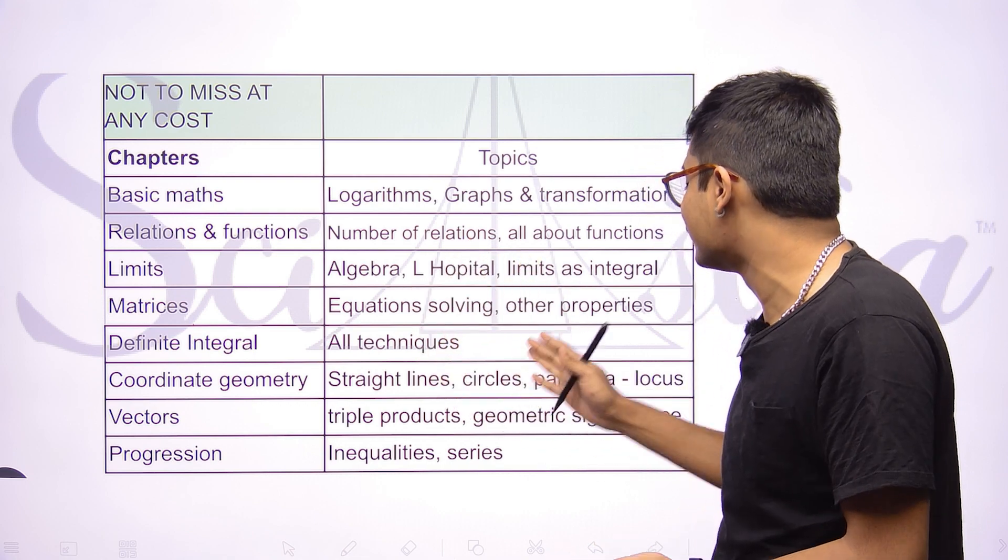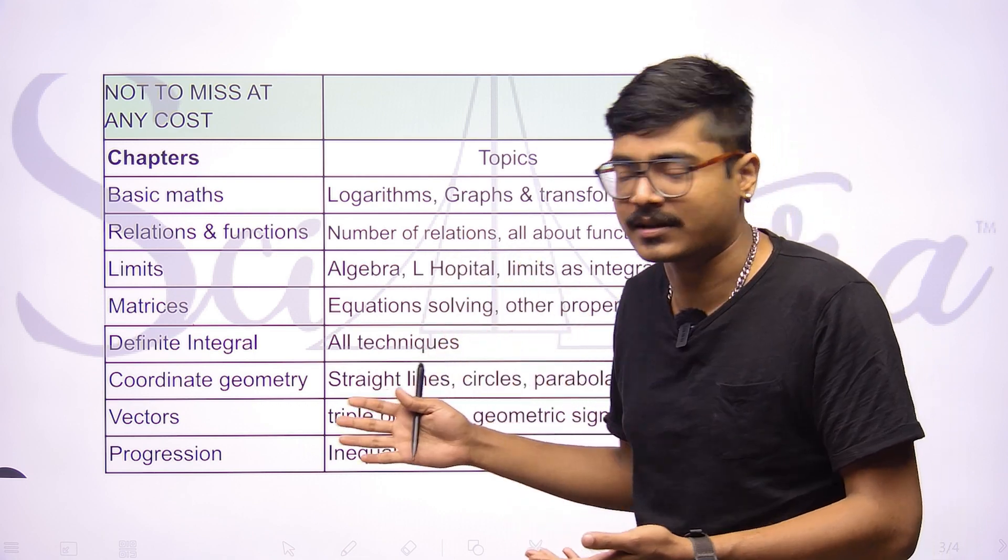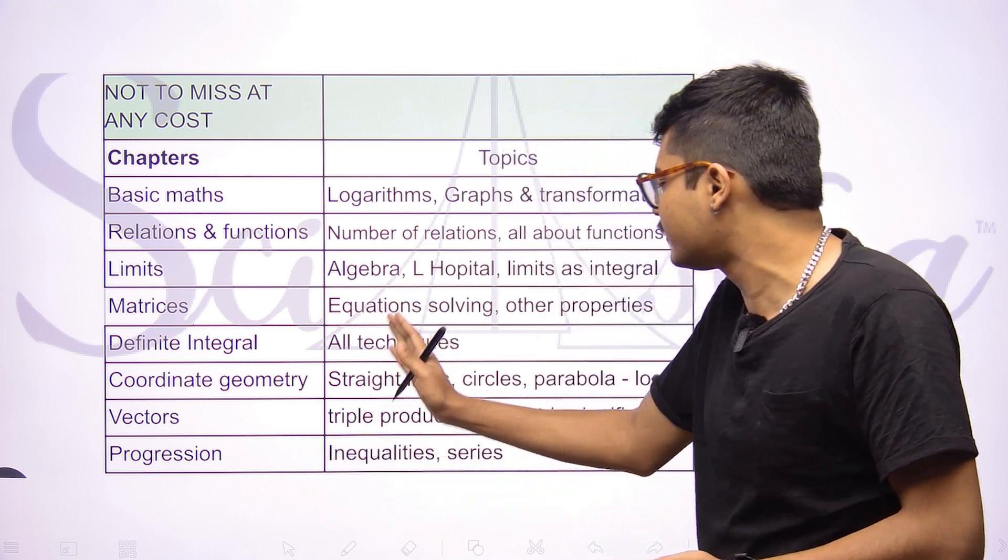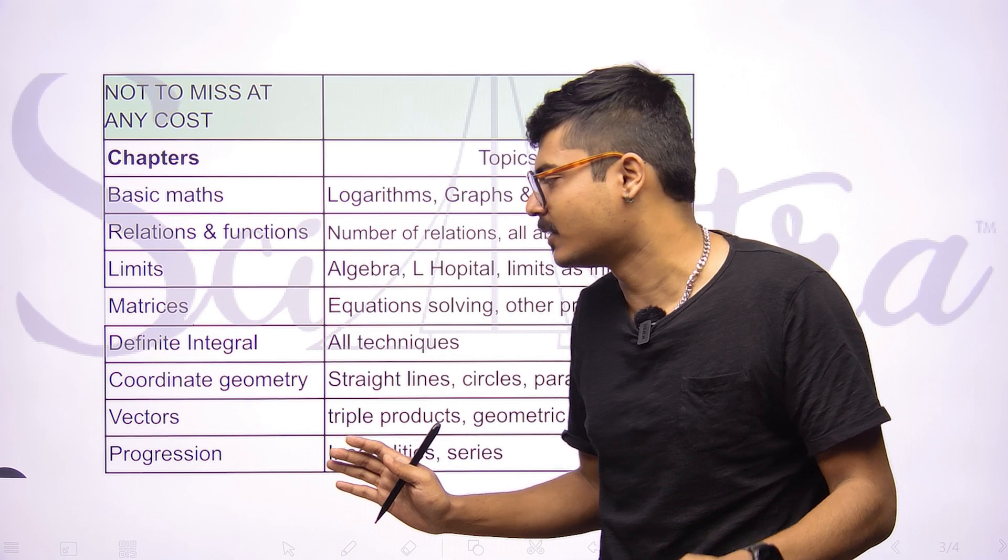Coordinate geometry, straight lines, circles, parabola, and finding locus. Even if you struggle with other topics like ellipses and hyperbolas, make sure straight lines, circles, and parabola, these three chapters you should not be missing out.